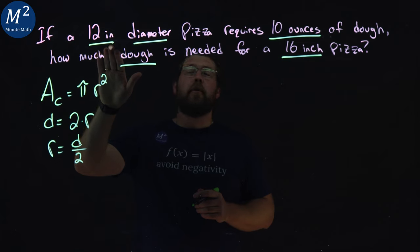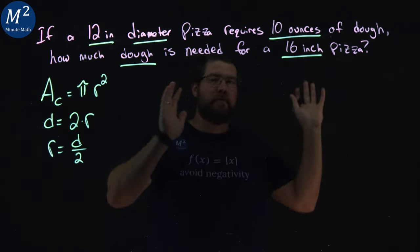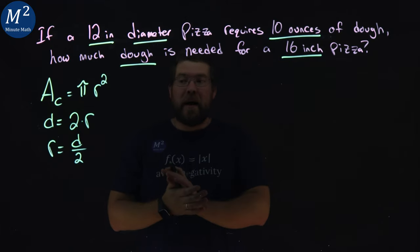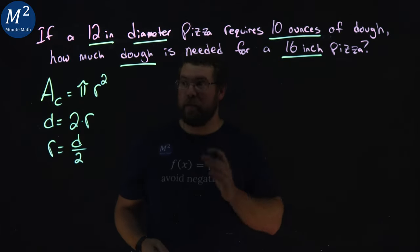So, a lot of students will set up a proportion here of 12 inches to 10 ounces, 16 inches to whatever ounces. And that would be incorrect. We need to set a proportion with the square inches of each pizza.